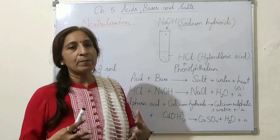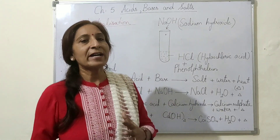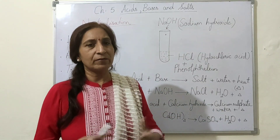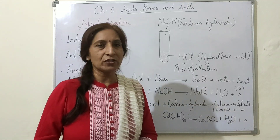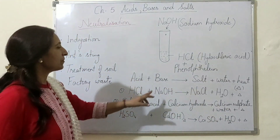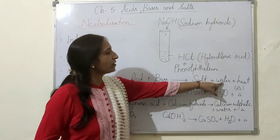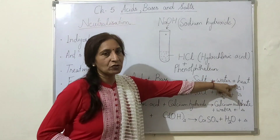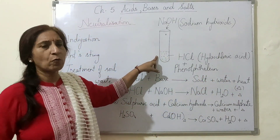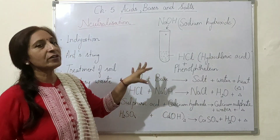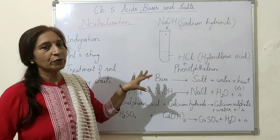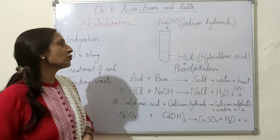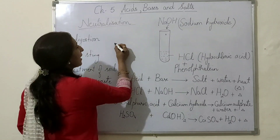In a neutralization reaction, when an acid and a base are mixed together they try to cancel each other's effect — they neutralize each other — and as a result a salt and water are formed, and heat is also produced. The reaction mixture becomes hot, and such a reaction in which heat is produced or the reaction mixture becomes hot is called an exothermic reaction.